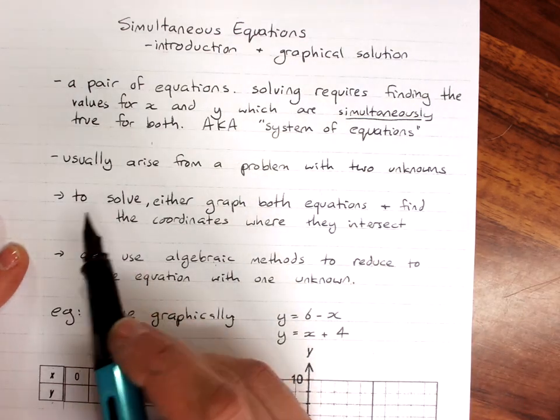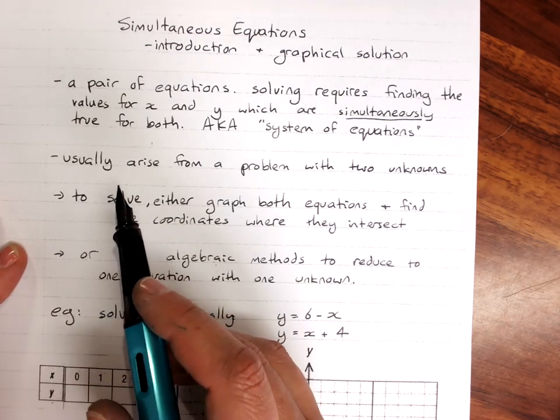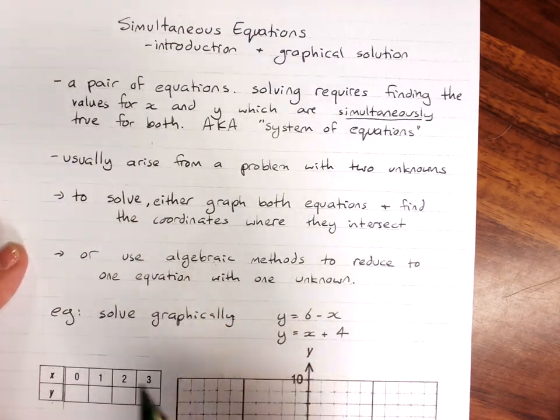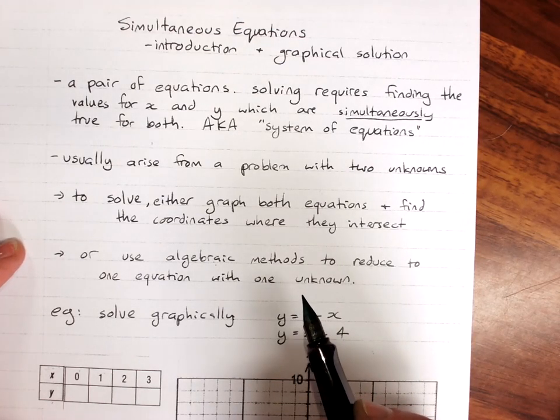They usually arise from a problem with two unknowns where we get told two relationships. So, for example, Tim and Tom have $6 between them. Tom has $4 more than Tim. How much do they each have?